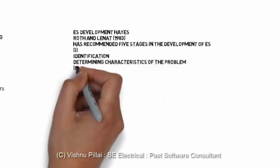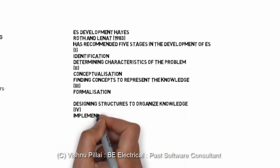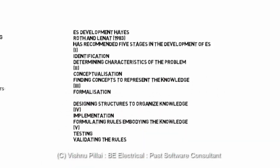Hayes Roth and Leonard recommended five stages in the development of an expert system. First is identification — determining the characteristics of the problem. Second is conceptualization — finding concepts to represent the knowledge. Next is formalization — designing structures to organize knowledge. Then implementation — formulating the rules embodying the knowledge. Finally, testing and validation. These are the development steps every expert system undergoes while being formed.